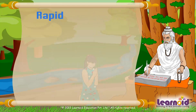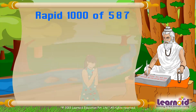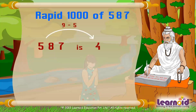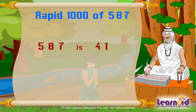Now we will do this mentally for 587: 9 minus 5 is 4, 9 minus 8 is 1, 10 minus 7 is 3. So the rapid 1000 of 587 is 413.